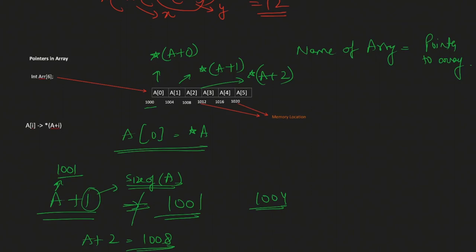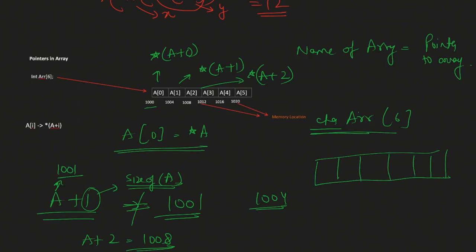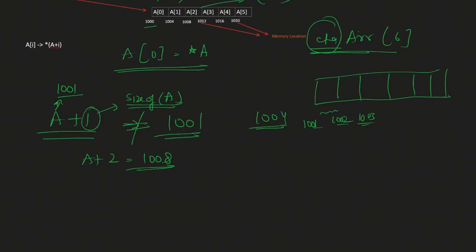We don't need to declare a separate pointer for arrays — the array name itself is the pointer. The same applies to character arrays or strings: if the array type is char, contiguous memory is allocated one byte at a time. So if the first element is at 1001, the next is at 1002, then 1003 — incrementing by one byte because the type is character, not integer. In the next video we'll run actual C++ code to see all of this in action.